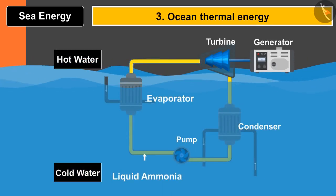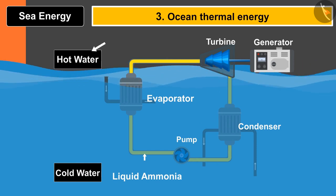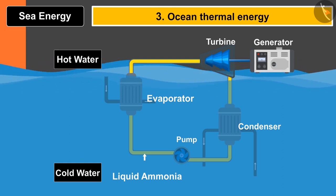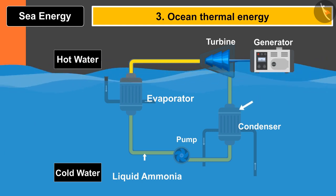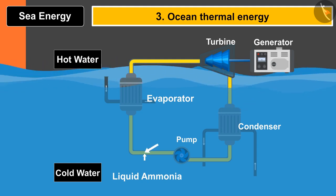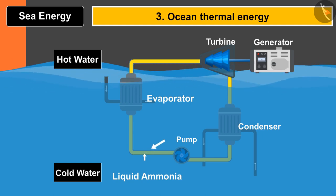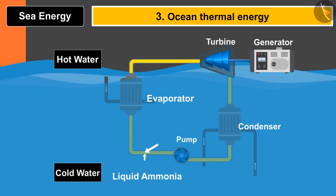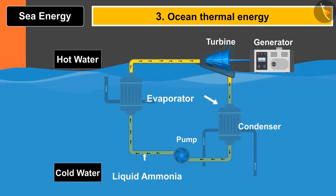In ocean thermal energy, rays from the Sun fall on the ocean and make the uppermost layer hot, increasing the temperature of that layer. Conversely, the lower layer of water remains cold. This change in temperature is used to rotate the blades of the turbine. A plant is placed in the ocean having an evaporator and a condenser; the pipe is filled with liquid ammonia. Being sensitive to temperature change, when ammonia comes in contact with the hot water it converts into vapor, rotating the turbine blades. When it moves down near the condenser it gets condensed and the cycle repeats.